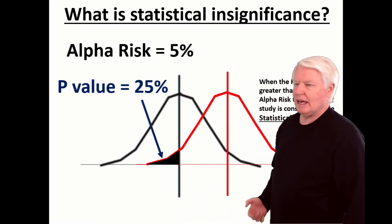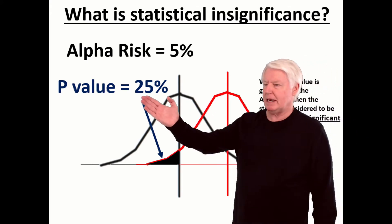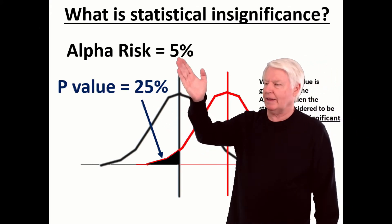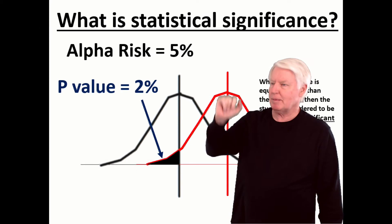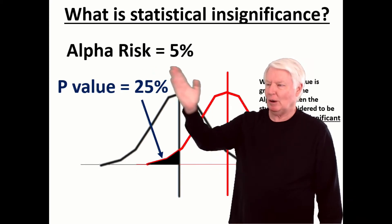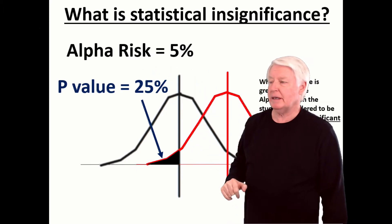Okay, here's another example for us. This time, the P-value is greater than the alpha risk. So I'm only willing to take 5% chance of being wrong when I answer the question, yes, it did make a difference. Okay, I'm only willing to take a 5% chance of being wrong.